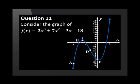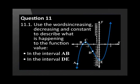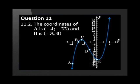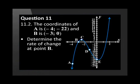Consider the graph f of x equal to 2x cubed plus 7x squared minus 3x minus 18. Use the words increasing, decreasing and constant to describe what is happening to the function value in the interval a, b, in the interval d, e. The coordinates of a is negative 4, negative 22 and b is negative 3 and 0. Determine the average rate of change between points a and b. Determine the rate of change at point b.